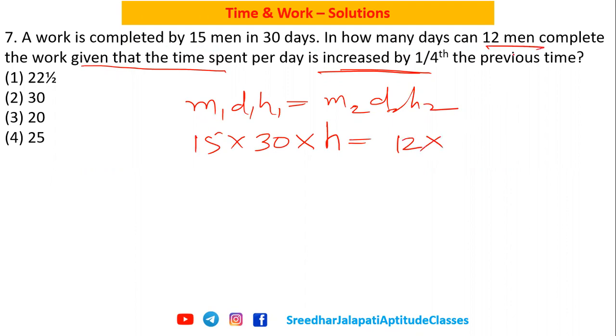we are given that 12 men work. We do not know how many days they take - that's what we are asked to find. So d2 is the variable. Though we do not know what h2 is directly, but it is